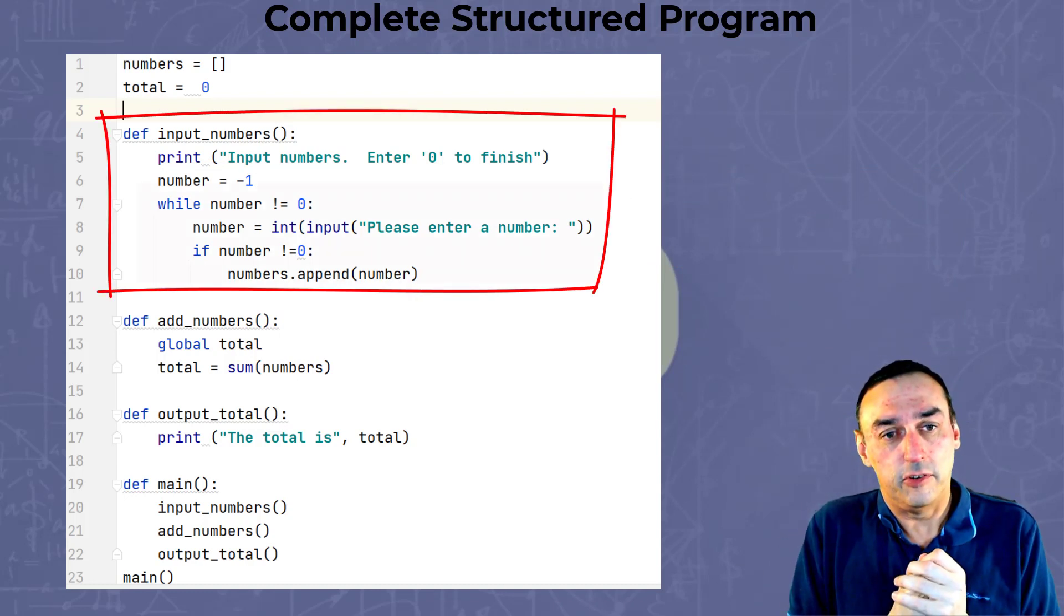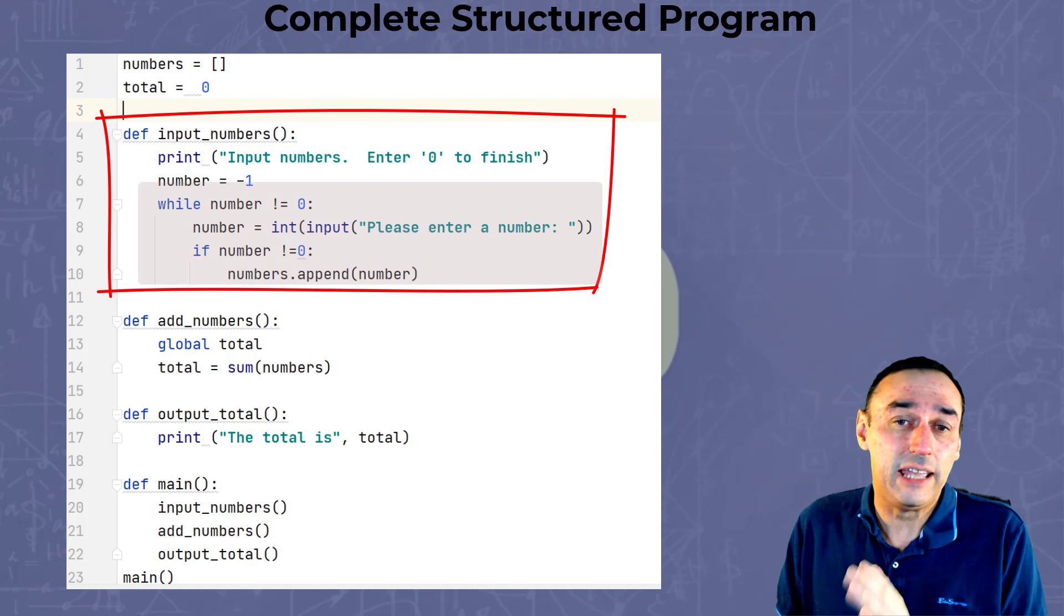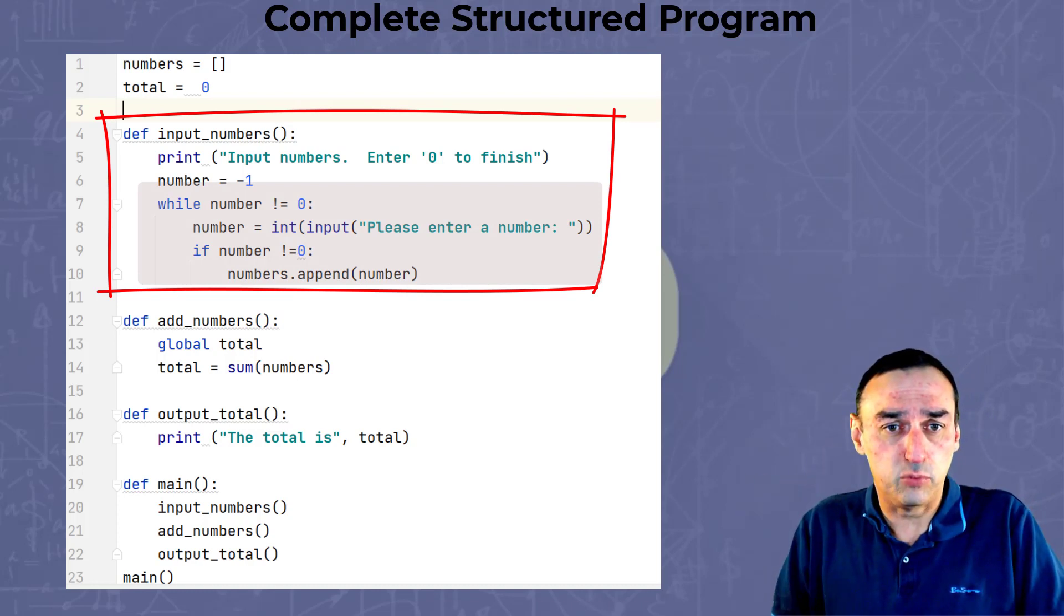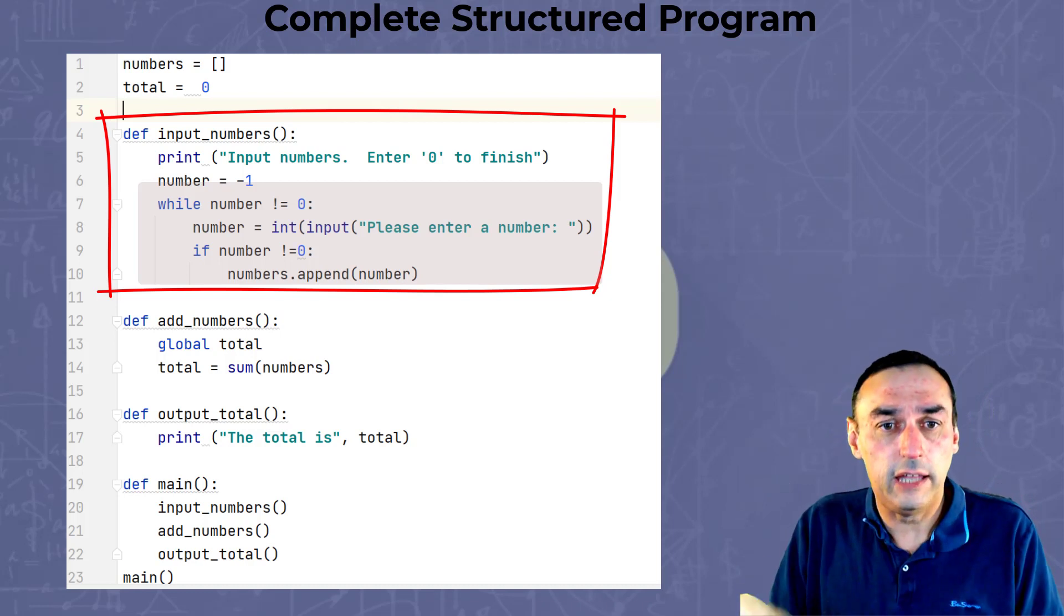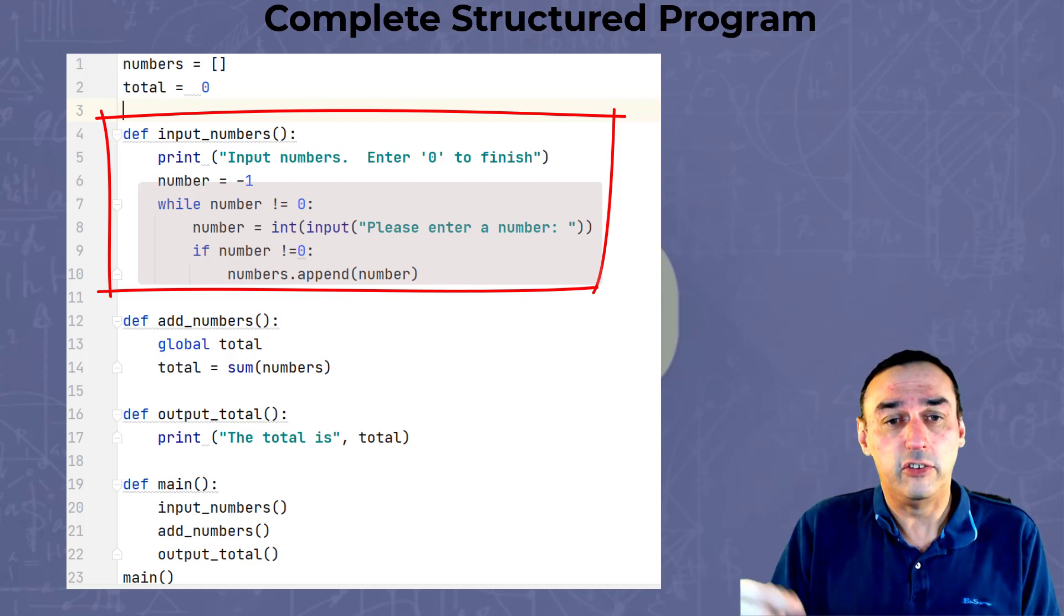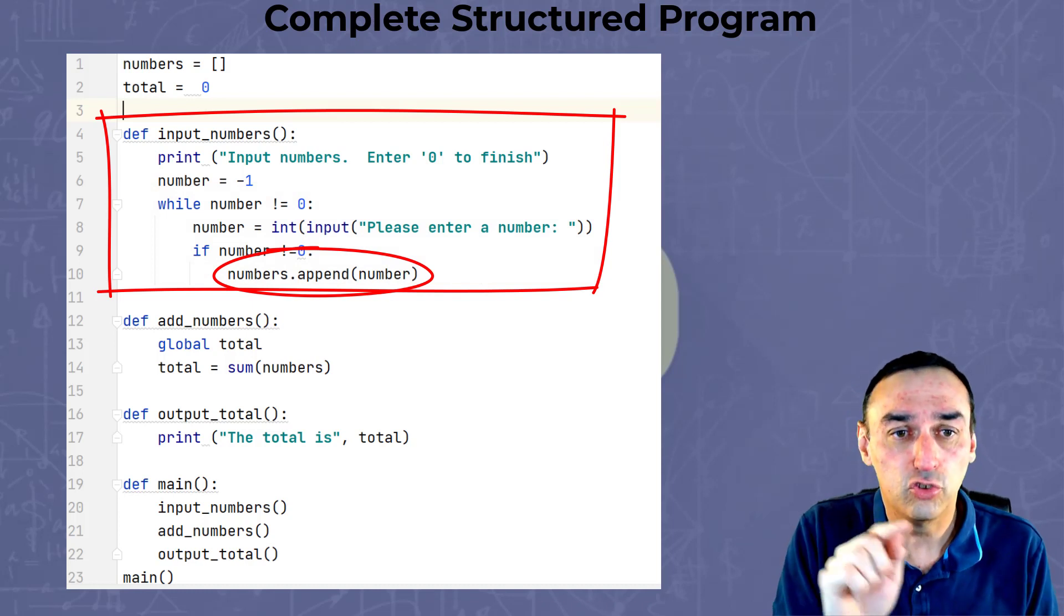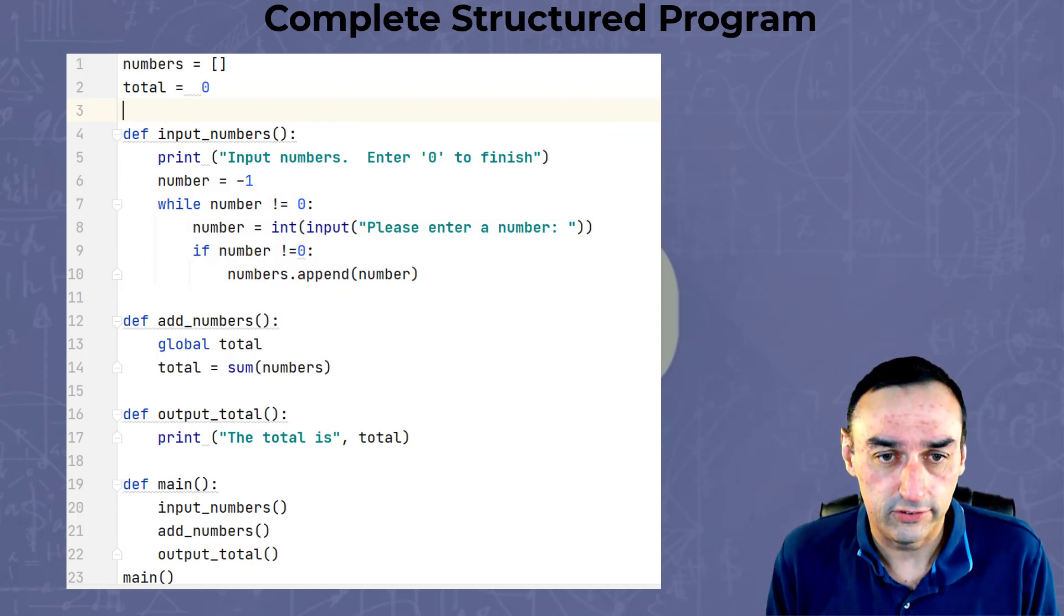If we take this first function, which is input_numbers, it's simply asking the user for an input, defining the number as minus one, and it will keep looping until you enter zero, in which case you've finished adding numbers. And every time you add a number, you will append it to the numbers list, as shown there.